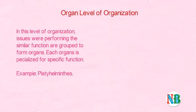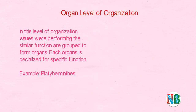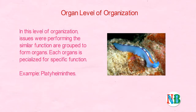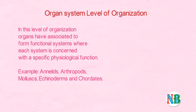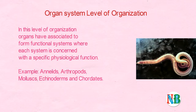Let us take the organ level of organization. In this level of organization, tissues performing similar functions are grouped to form organs. Each organ is specialized for a specific function. Example: Platyhelminthes.